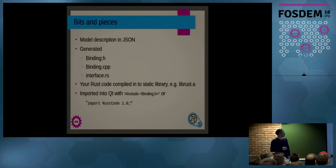Basically you can even forget about this, and just know that we're going to build a model which gives you all of that. So how is it going to work? We write a model description in JSON, and then the tool will generate a binding.h and a binding.cpp file, which we use in our C++ code. And an interface.rs, which will contain a trait, a Rust trait, which you have to implement. And then you compile your Rust code into a static library, which you link to your C++ application. And you either import it with binding.h, or if you're using QML, with import Rust code. The Rust code is a name you can use, you can think of yourself. This is what I use in my examples.